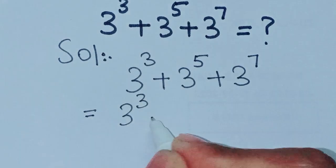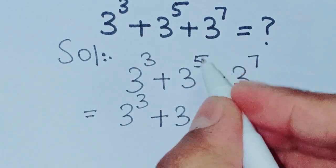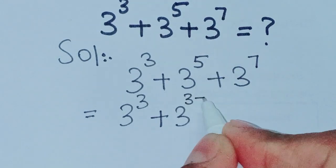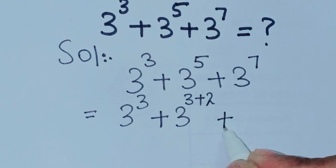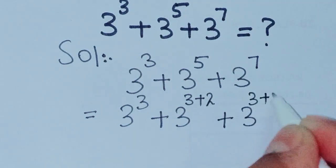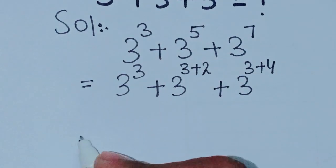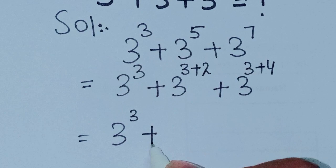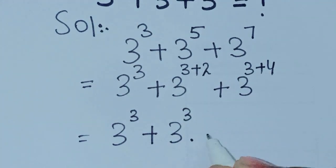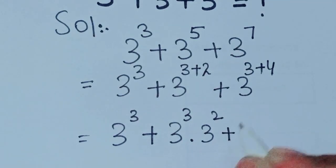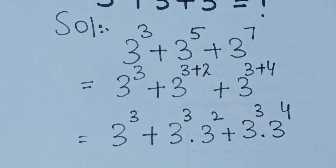We have 3 power 3 plus 3 power 5 plus 3 power 7. We can write 3 power 5 as 3 power 3 plus 2, and 3 power 7 as 3 power 3 plus 4. So this becomes 3 power 3 plus 3 power 3 multiplied by 3 power 2, plus 3 power 3 multiplied by 3 power 4.